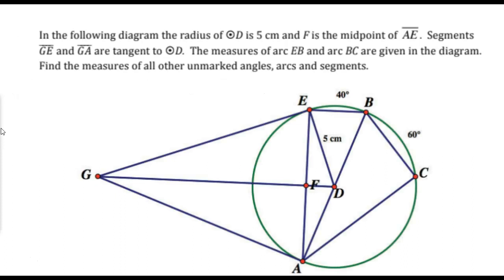In the following diagram, the radius of circle D is 5 cm and F is the midpoint of AE. Segments GE and GA are tangent to circle D. The measures of arc EB and arc BC are given on the diagram. Find the measures of all other unmarked angles, arcs, and segments.